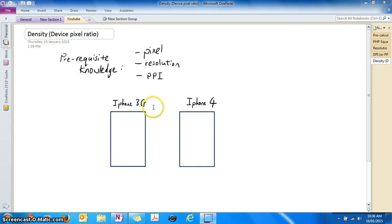So the rectangle represents the dimensions of their display of the monitor. iPhone 3G has a resolution of 320 by 480. Whereas an iPhone 4 has a resolution of 640 by 960.